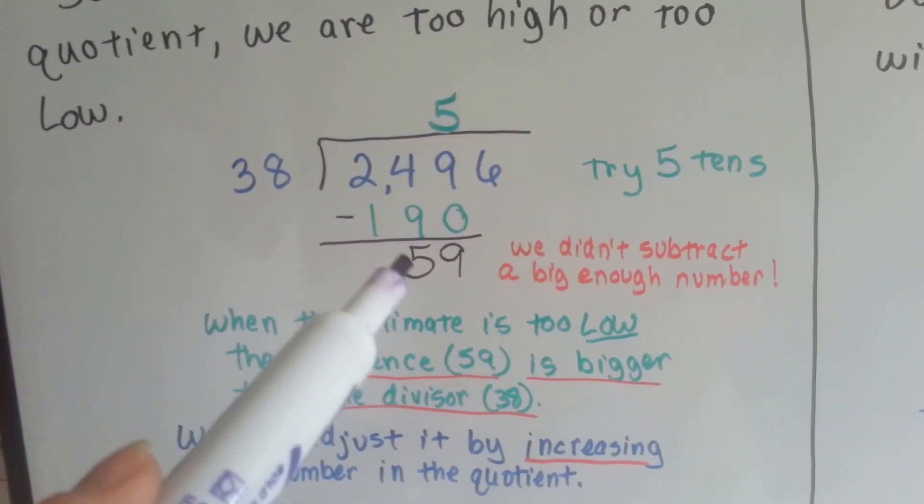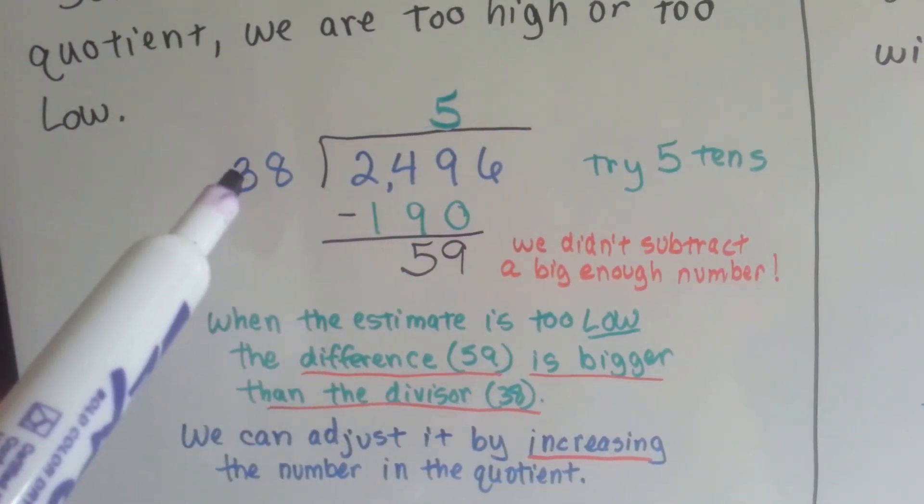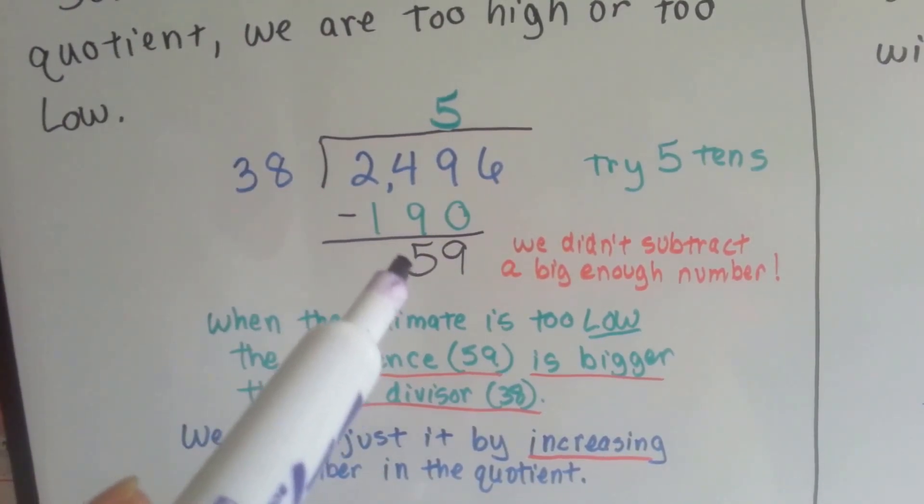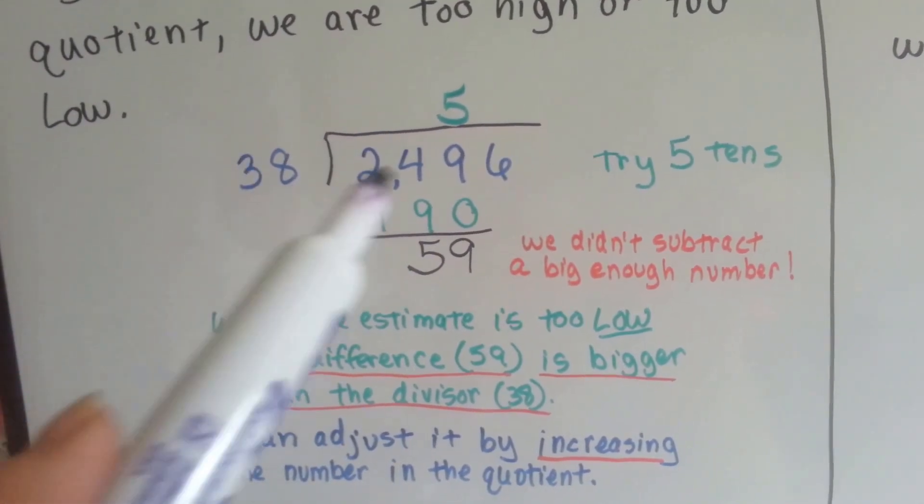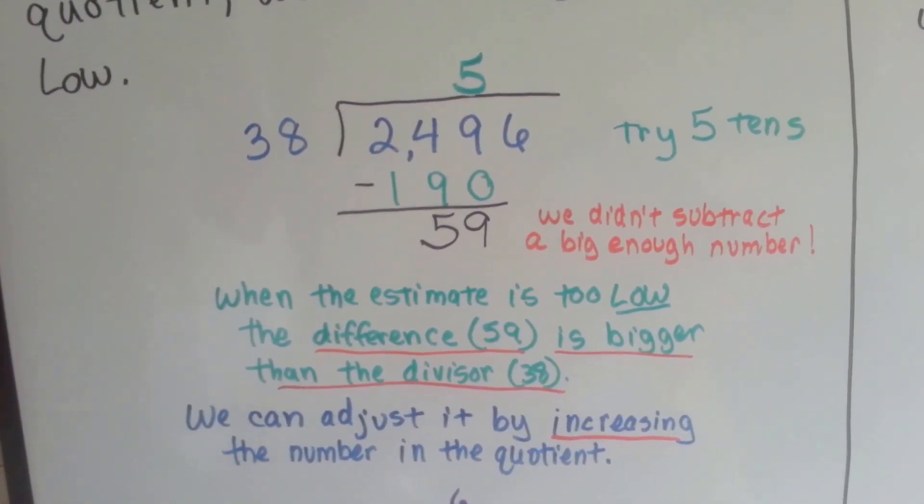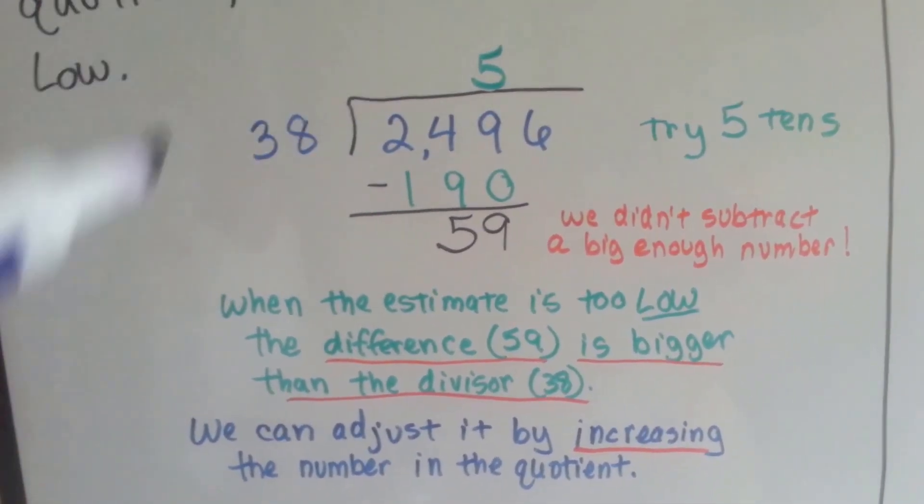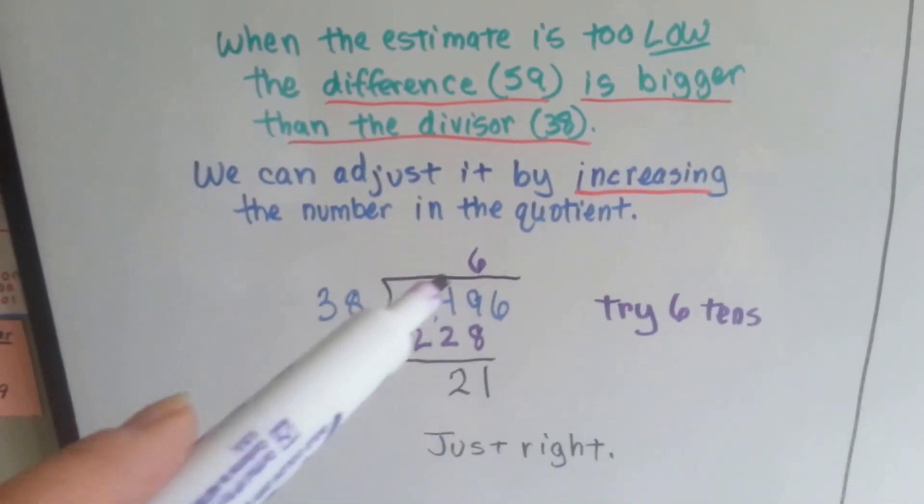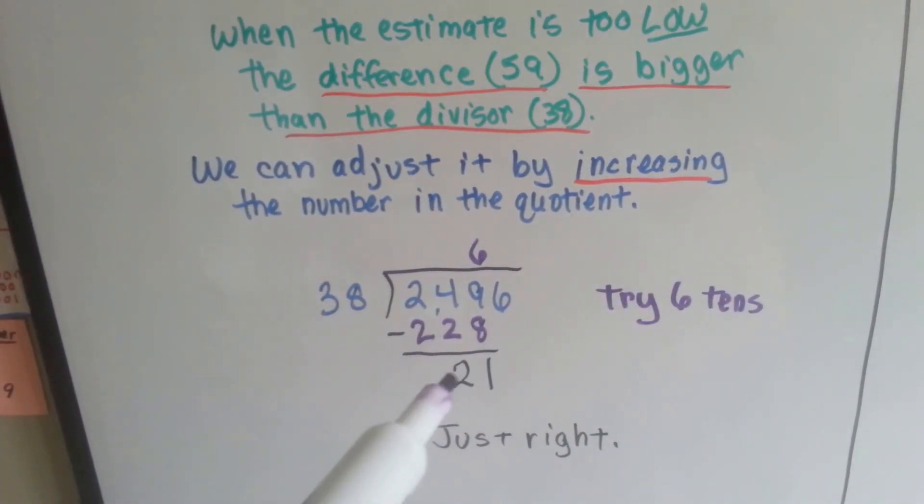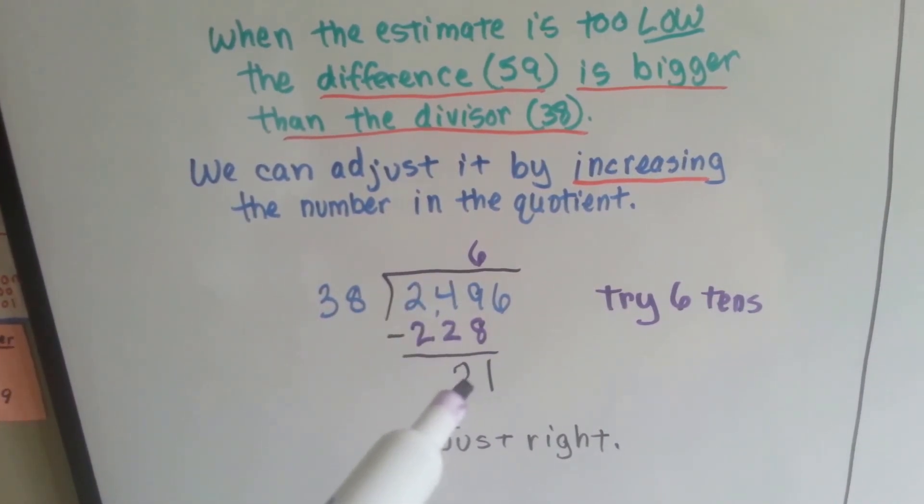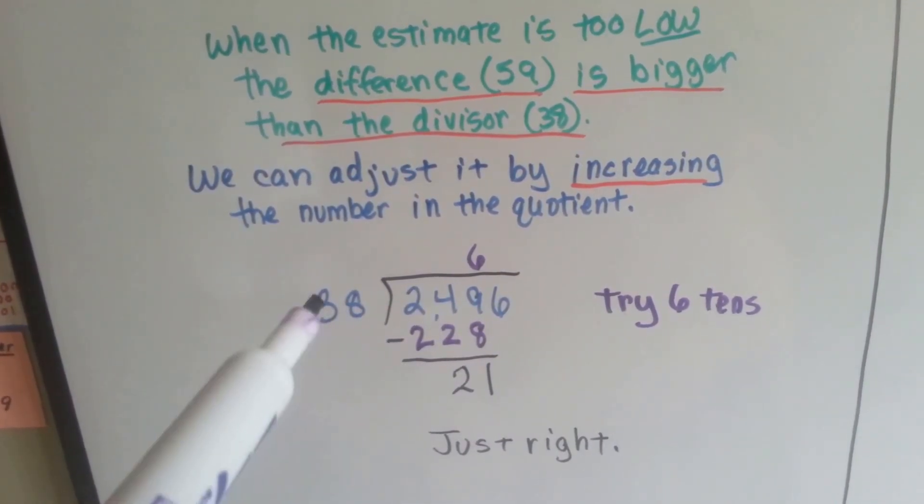When this 59 is bigger than the divisor, when this subtracted difference is bigger than the divisor, then that is too low. We can adjust it by increasing it by 1. If we go up to 6, we see that it's just right. We can continue on with our problem because we got a 21, and that's not bigger than the divisor.